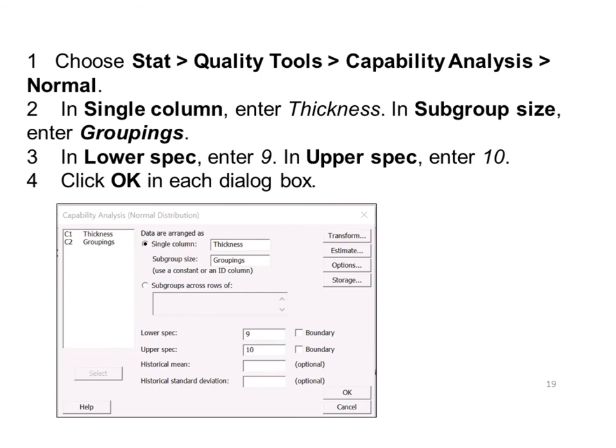Next, I will guide you to plot the process capability plot. Choose Stat, Quality Tools, Capability Analysis, Normal. In the single column, enter thickness. In subgroup size, enter groupings. In lower spec, enter 9. In upper spec, enter 10. Click OK in each dialog box.